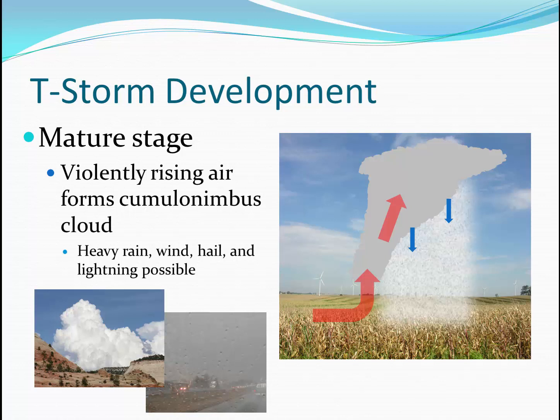Violently rising air with strong updrafts lift air high into the atmosphere. As that water vapor condenses, heavy rain may be formed. Strong winds and hail and lightning are often possible with these storms. You see here a large, developing cumulonimbus cloud over the canyon country of Utah, and a view from the underside of a cumulonimbus cloud where it's pouring rain.